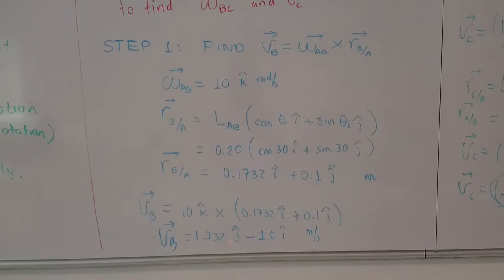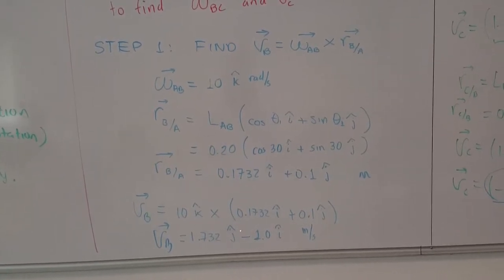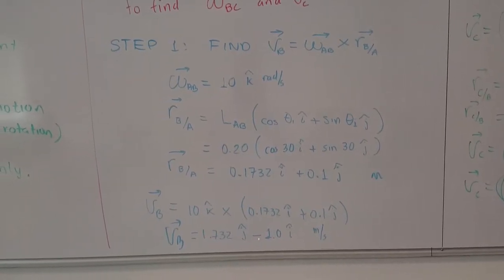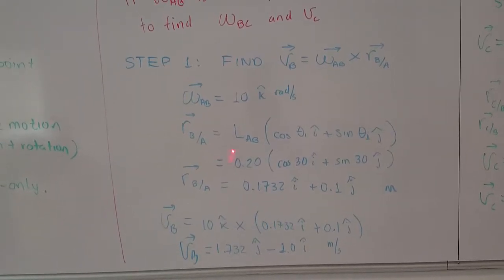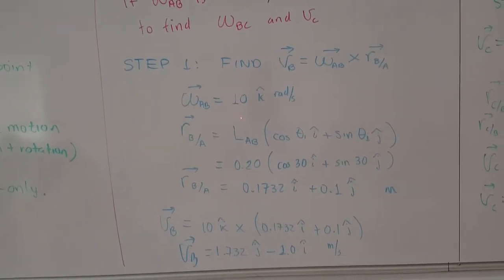Now, just by doing the cross product of these two quantities, the angular velocity of AB and the position vector from A to B, we get the velocity of B as a vector, already with known values. So this is the first step, finding the velocity of B, starting from the angular velocity of AB.